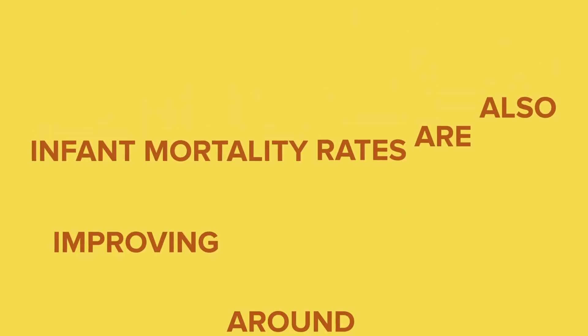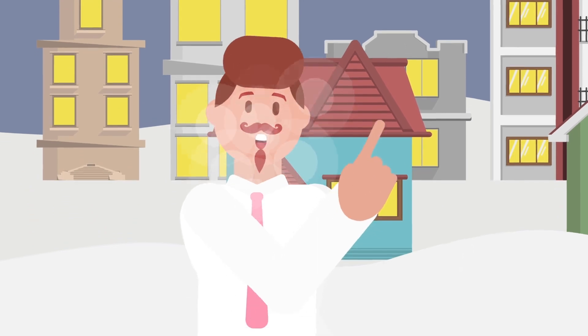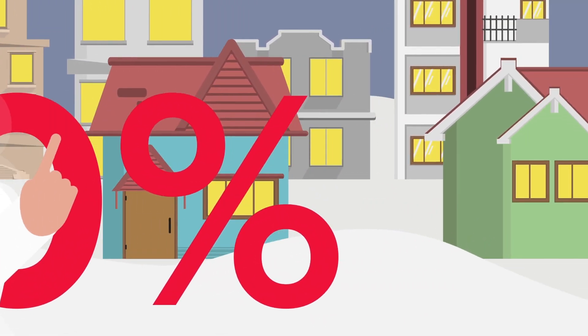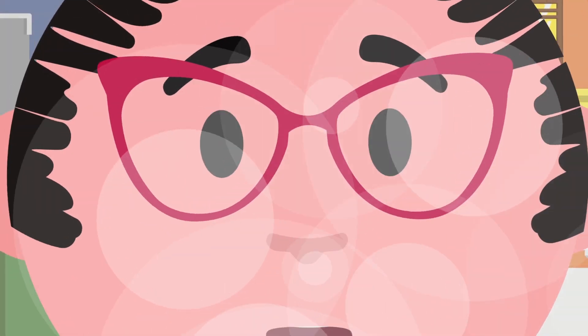Infant mortality rates are also improving around the world. In 1921, even countries like Canada had a 10 percent infant mortality rate, so as these numbers improve, the average life expectancy increases, especially in developed nations.